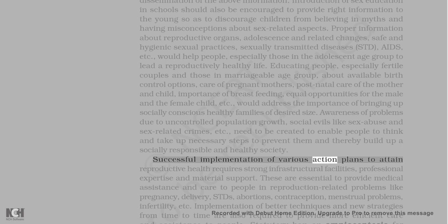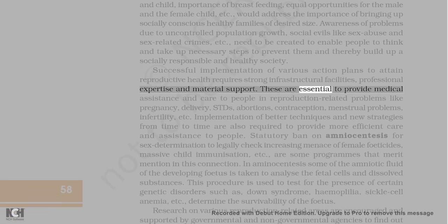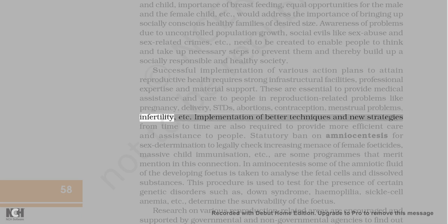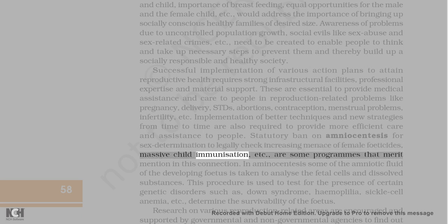Successful implementation of action plans to attain reproductive health requires strong infrastructural facilities, professional expertise, and material support. These are essential to provide medical assistance and care for reproduction-related problems like pregnancy, delivery, STDs, abortions, contraception, menstrual problems, infertility, etc. Implementation of better techniques and new strategies are also required. A statutory ban on amniocentesis for sex determination to check the increasing menace of female feticides, and massive child immunization, are some programs that merit mention.